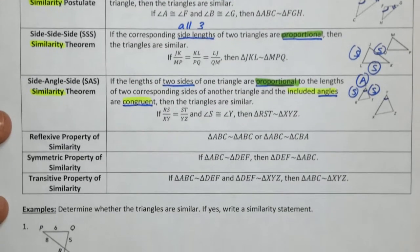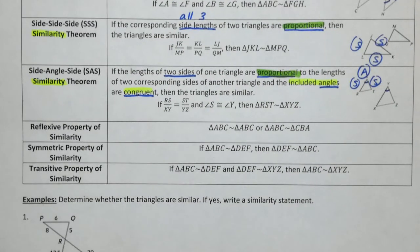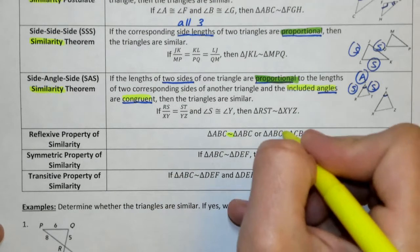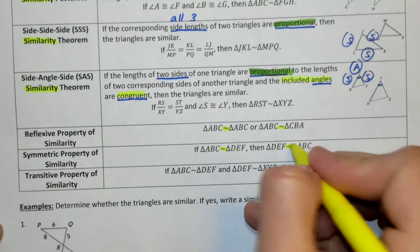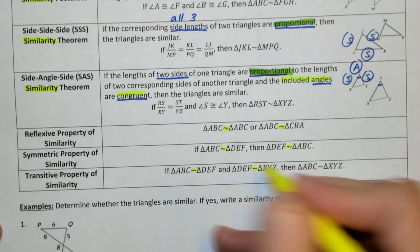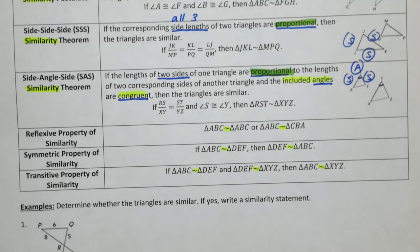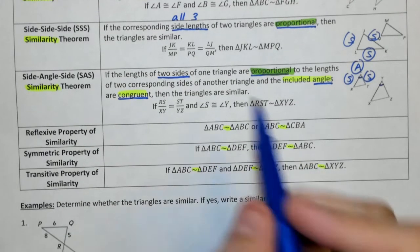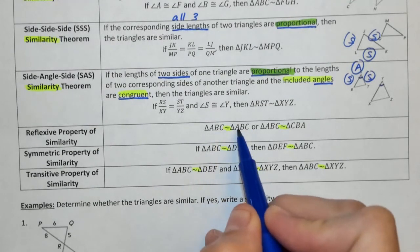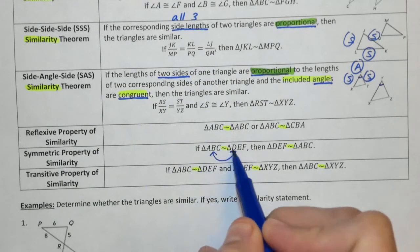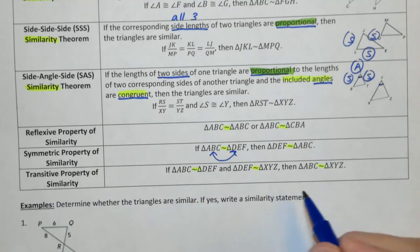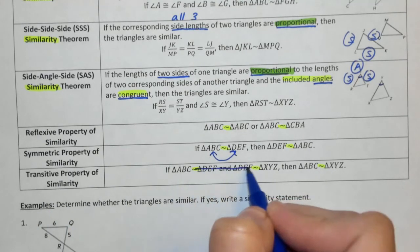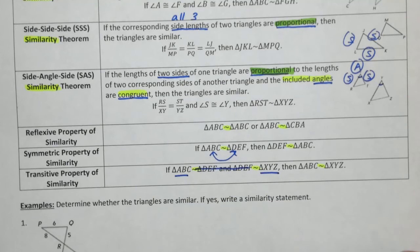We go back to our reflexive property, symmetric property, and transitive property, doing the exact same thing we've always seen, but now we have a similarity symbol in between them. We've seen congruent and equal, but now we just have that similar symbol. Reflexive: same thing on both sides. Symmetric: the two switch. Transitive: you cross out the middleman and bring the two outers together.